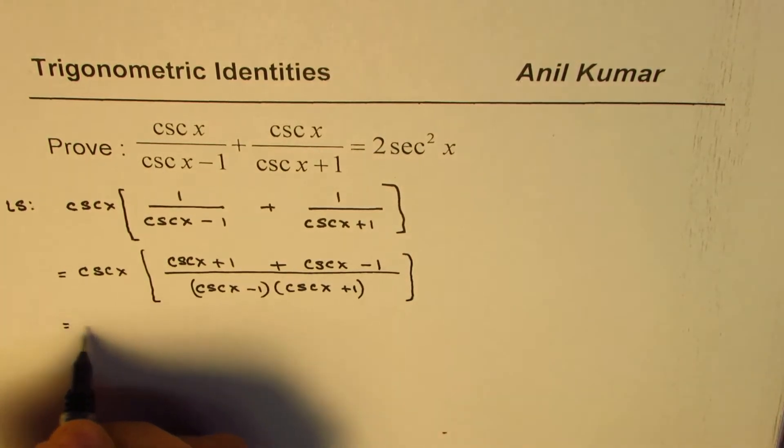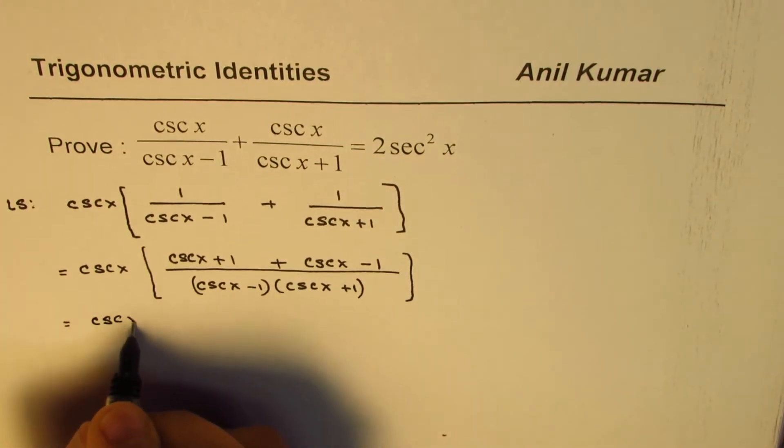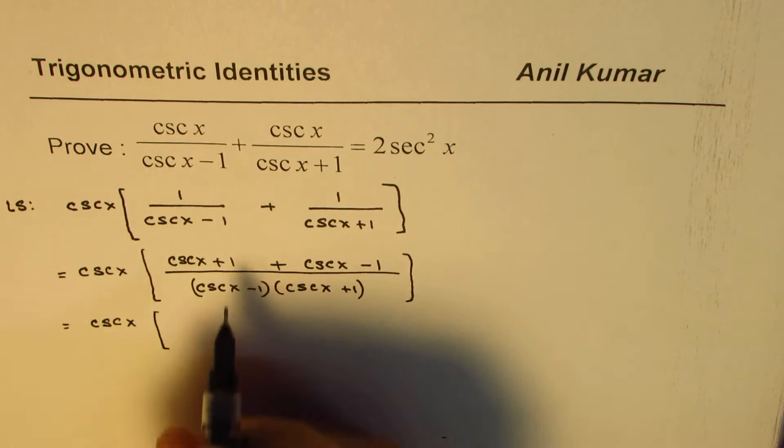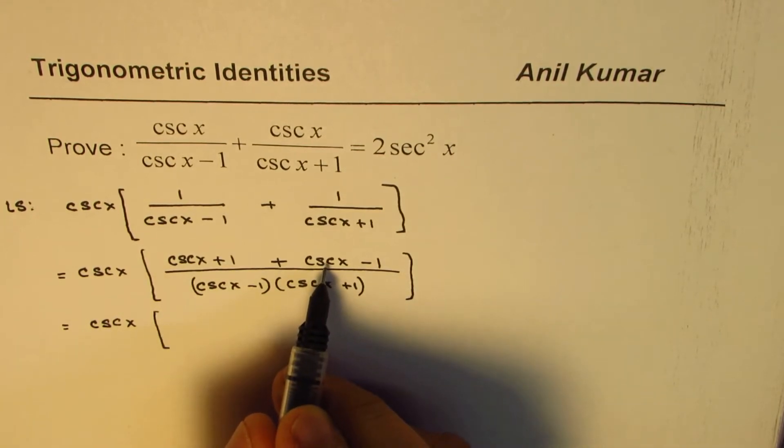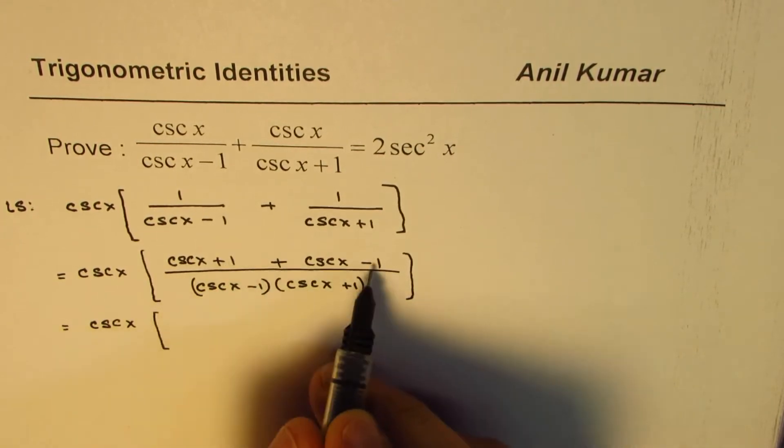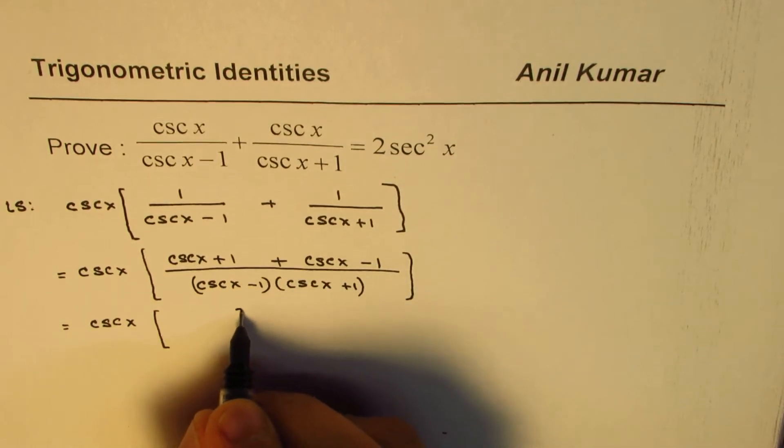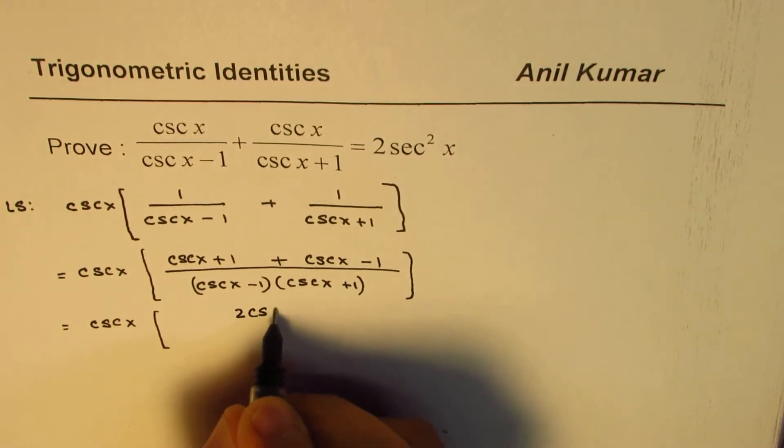Combining the terms in the numerator, what do we get? Cosecant x plus cosecant x gives us 2 cosecant x. 1 minus 1 is 0. So, we get 2 cosecant x.